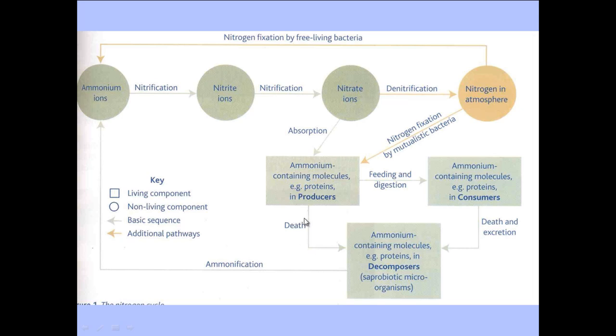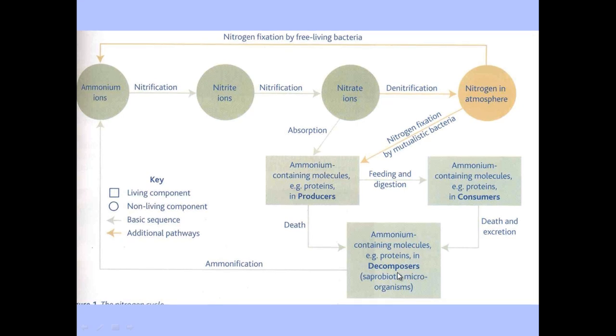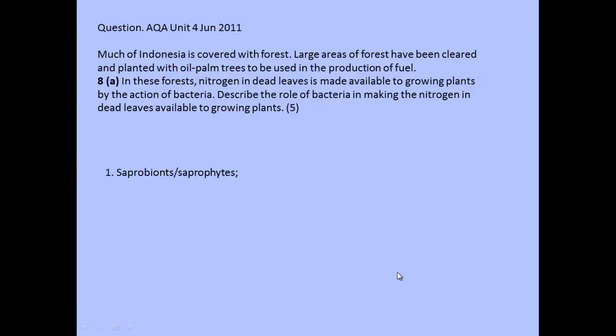Looking at it logically, we're taking a path all the way through the diagram. The first part is the organism dies and is broken down by decomposers. The specific term you need to use to score the mark here is saprobiotic, saprobionts, or saprophytes — these identify the type of bacteria that break down dead material. From there, they digest and break down proteins, DNA, and nitrogen-containing substances found within the dead plant. You need to be specific in talking about proteins, DNA, or nitrogen-containing substances — something that actually contains nitrogen.